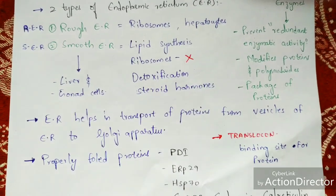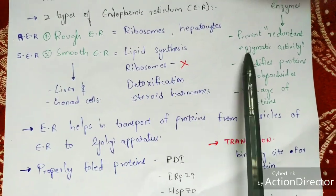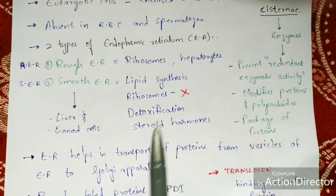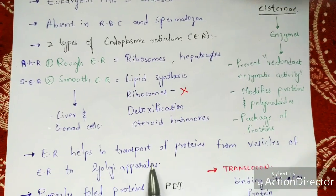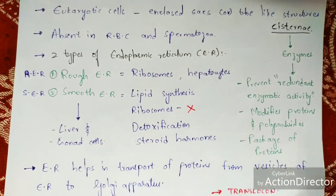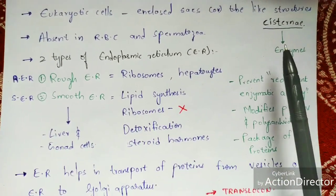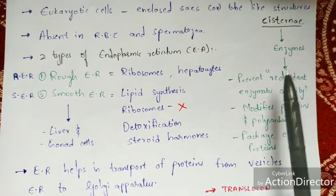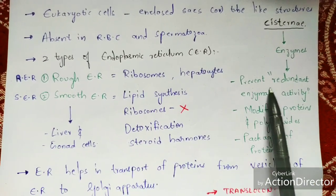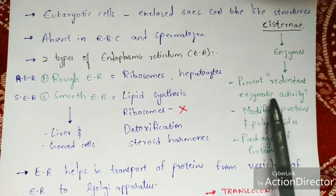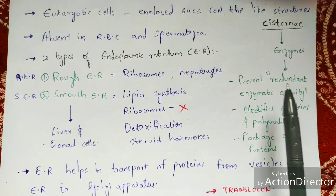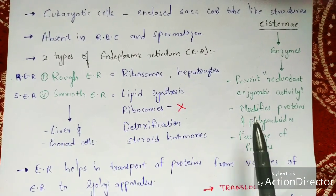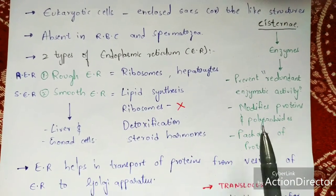The cisternae are present in the Golgi apparatus. The main function of the cisternae is that they consist of enzymes which play a major role in the prevention of redundant enzymatic activity. They also help in the modification of proteins and polysaccharides, and in the packaging of proteins.